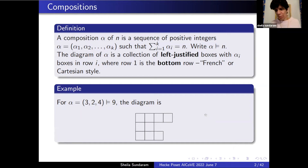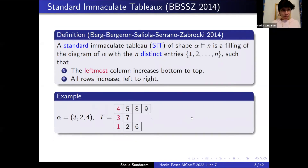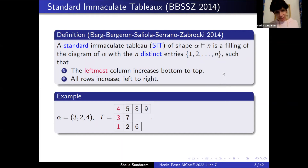This was a huge adjustment for me a few months ago, because I grew up on diagrams with the longest row on top. The other thing that was hard to get used to — and if you're seeing this for the first time you might have the same experience — is this definition of standard immaculate tableau, where all the rows increase from left to right, but the restriction is only on the leftmost column.